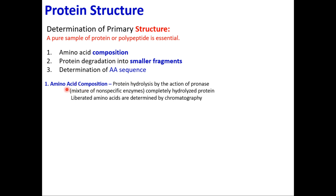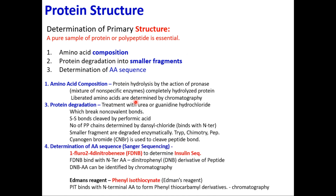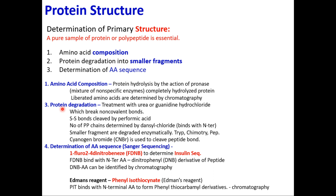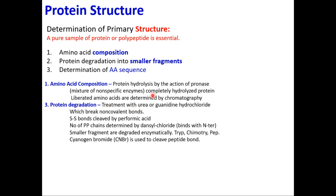Amino acid composition is determined by protein hydrolysis using pronase. Pronase — a common viva question — is a combination of protein-digesting enzymes like trypsin and chymotrypsin and other enzymes that break up peptide bonds. Due to pronase activity, the amino acids within the protein are liberated. For protein degradation, treatment with urea or guanidine hydrochloride is used. Performic acid is used to break disulfide bonds; urea and guanidine hydrochloride are used to break peptide bonds.